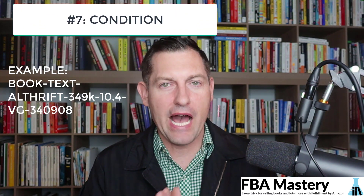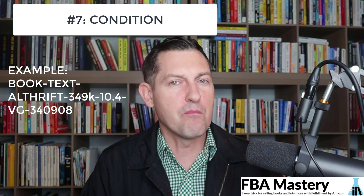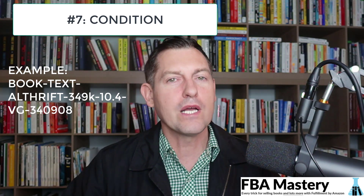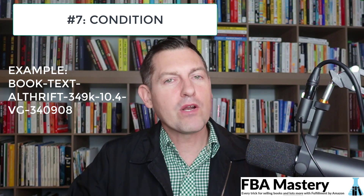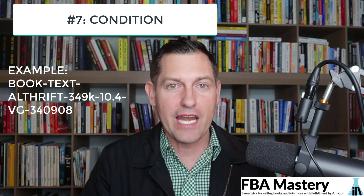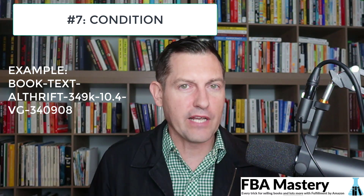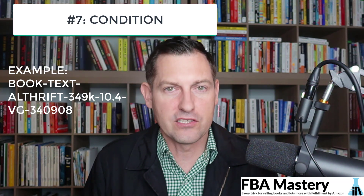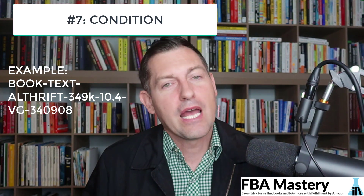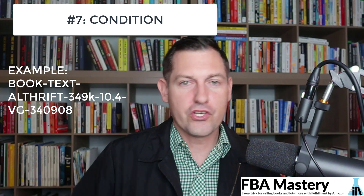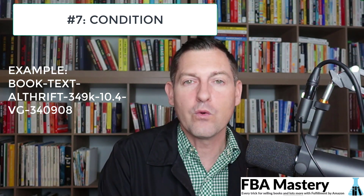Number seven: including the condition of the item in the SKU. I personally don't do this, but one reason it's useful is with online arbitrage. Let's say you sourced an item online expecting it to be in good condition, but when it arrives you realize it's only acceptable. You can see in the SKU what condition you thought you were getting, which can tell you whether to return it and helps track discrepancies between what you thought you were getting and what you actually received.